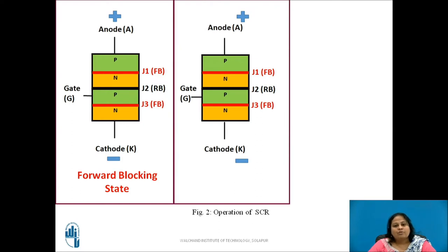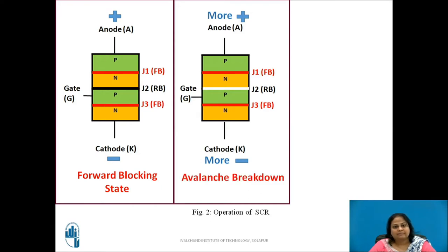When this positive anode to cathode voltage is increased, the width of the depletion layer at junction J2 decreases. If this voltage is kept on increasing, then after a certain point, the depletion layer at junction J2 vanishes as the reverse biased junction J2 breaks down due to the large potential difference across its depletion layer. This is called Avalanche breakdown. At this stage, as J1 and J3 are already forward biased, there will be a large free carrier movement resulting in a large amount of current flowing from anode to cathode. Due to this, the device starts conducting and is in a conducting state or ON state.